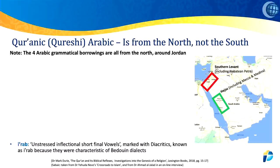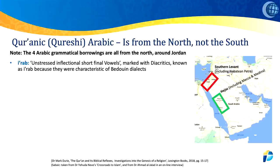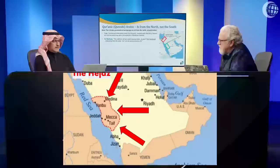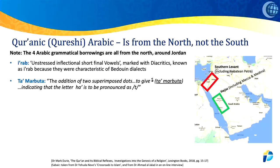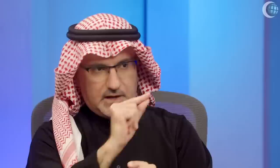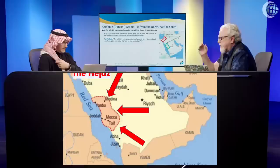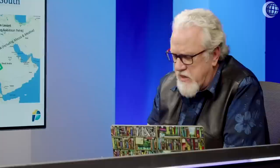Let me give you some examples. Al-Jalad and Mark Dury talk about the I'rab — the unstressed inflectional short vowels marked with diacritics — because they were characteristics of Bedouin dialects found much further north. Then there's the Taa Marbuta, which you find in the Quran. It's like a circle with two dots above it at the end of a word. It sounds like an 'h' but puts a 't' sound in — like when you say 'jannah' or 'jannatum,' or 'imra'atun' meaning 'a woman.' That's the Taa Marbuta. But that comes from way up in the north — it was unique to that part.